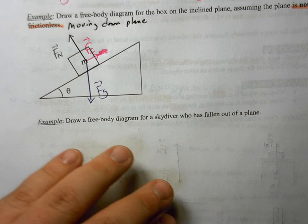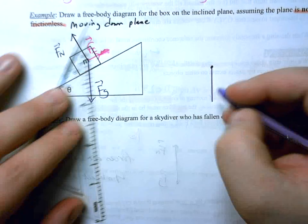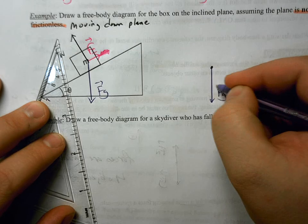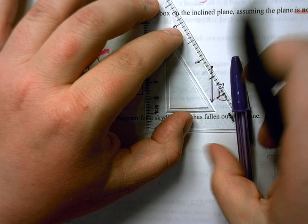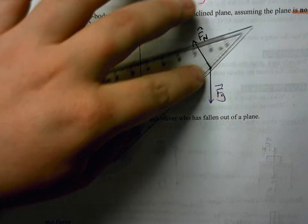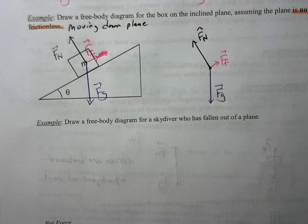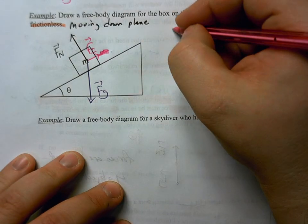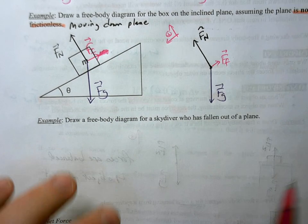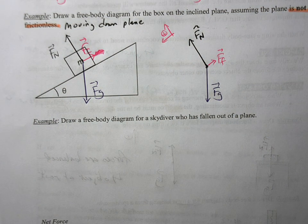Let me transcribe this into a proper FBD. We have the force of gravity going straight down, the normal force going perpendicular to the plane, and then a smaller force of friction going up the plane. You can label it as force of kinetic friction since the object is moving. For positive conventions, I'm using a coordinate system parallel with the plane and perpendicular to it — don't worry about that for now, it will be explained in much more depth later.